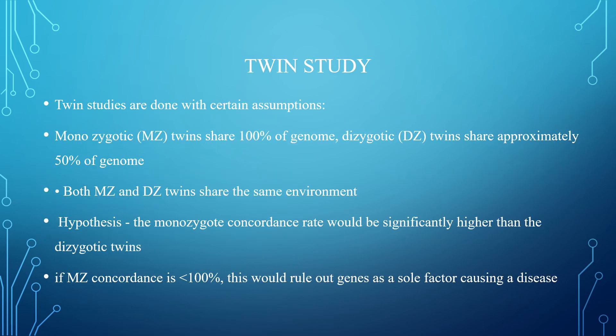The twin study is done with certain assumptions: monozygotic twins share 100% of their genome and dizygotic twins share approximately 50% of the genome. Both monozygotic and dizygotic twins share the same environment. The hypothesis is that the monozygotic concordance rate would be significantly higher than that of dizygotic twins. If the monozygotic concordance is more than 0% but less than 100%, this would rule out the gene as a sole factor causing the disease.